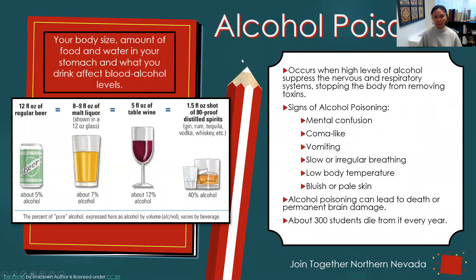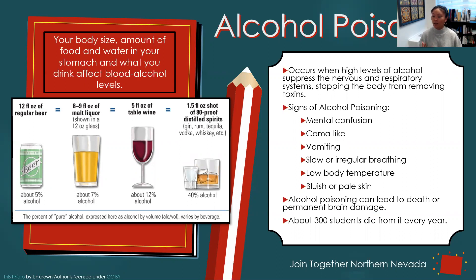Now let's get into disorders, diseases, and further consequences. Alcohol poisoning occurs when high levels of alcohol suppress the nervous and respiratory systems, stopping the body from removing toxins. This involves the liver and nervous system, both of which we've talked about. Over time, you can develop alcohol poisoning.